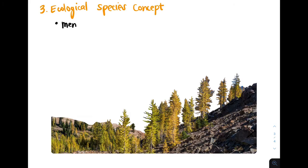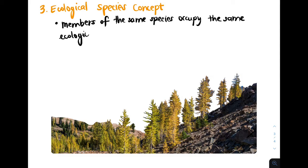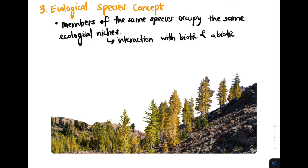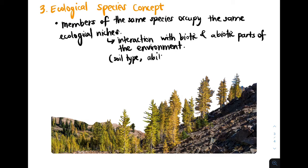Now let's take a look at the ecological species concept. This concept states that members of the same species occupy the same ecological niches — the way they interact with abiotic (non-living) and biotic (living) parts of their environment are very similar. A niche can be the soil type a plant prefers, their ability to tolerate cold climates, or the elevation at which they survive best.